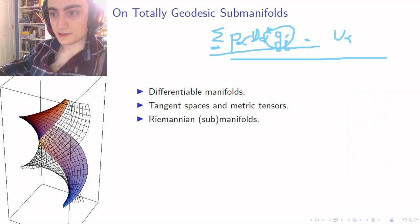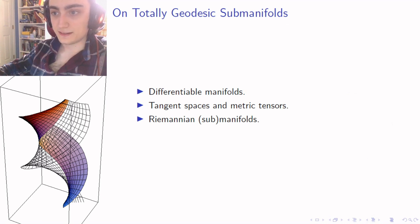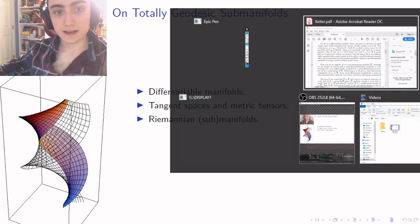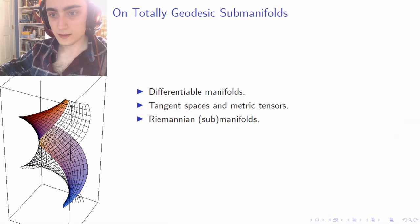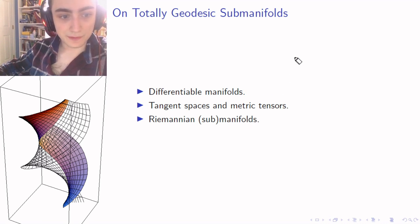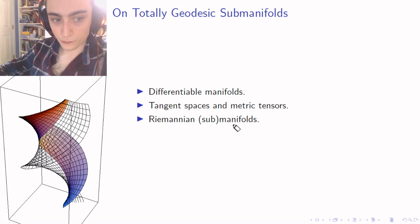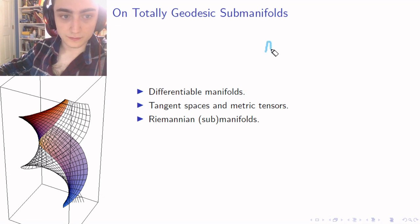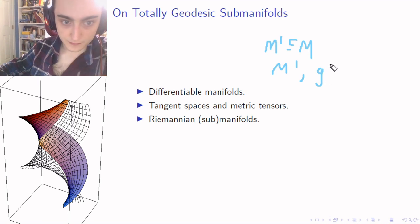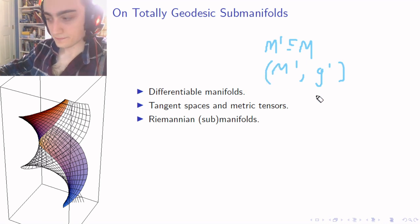That's a nice result. Now a Riemannian submanifold is exactly what you'd expect: a differentiable submanifold M', say, contained in M, taken together with the restriction g' of the metric tensor of M on M'. This will always give a submanifold, and it's important to think about why.